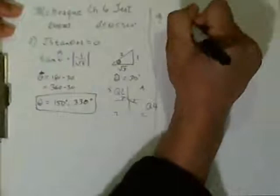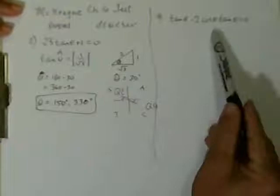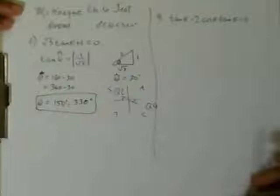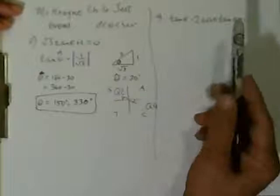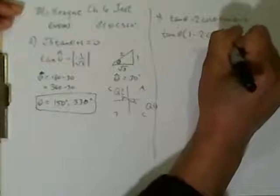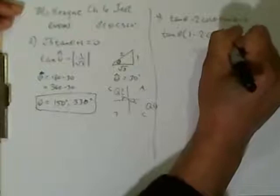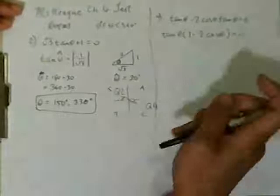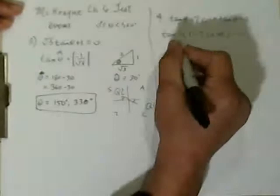Let's do number 4. It's a little bit more difficult. Tangent theta minus 2 cos theta times tangent theta is equal to 0. We notice we have two terms both containing tangent theta, so the first thing we want to do is factor out tangent theta. That gives us tangent theta times (1 minus 2 cos theta) equals 0. Using the zero product property, we zip it out.